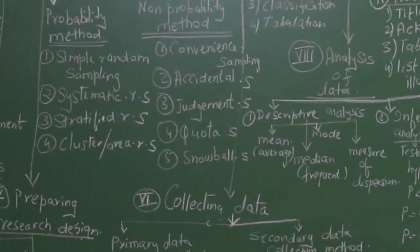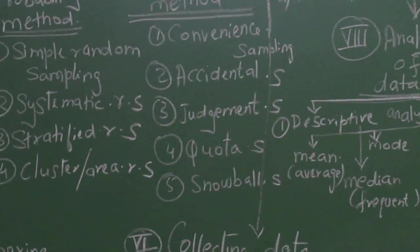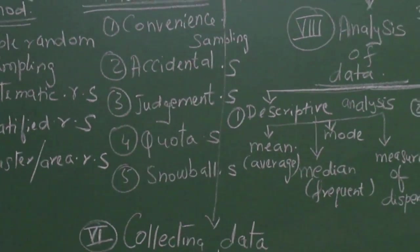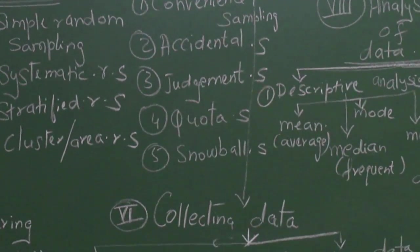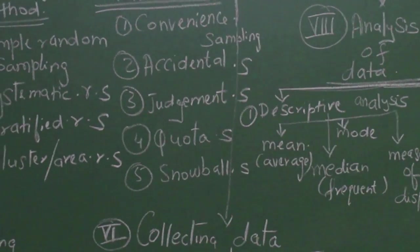The non-probability method. Suppose I am a little lazy and convenience is more important for me, and I don't have much time. So I go to a school which is just next to my house and take 50 students from there. That becomes convenience sampling.